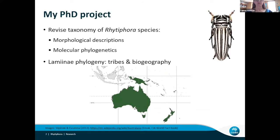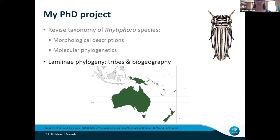My PhD was mostly focused on testing the monophyly of Rhytifera using morphology and DNA from museum specimens. The second part was to produce a subfamily-level phylogeny, so I could see if the tribes hold up to molecular scrutiny, examine the biogeographic history of the Australasian fauna, and put Rhytifera in a broader context. I talked about the first part of my project a couple of years ago, so today I'll be talking about the biogeography chapter.